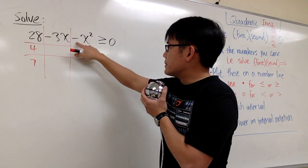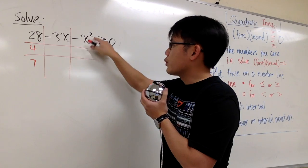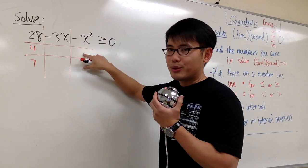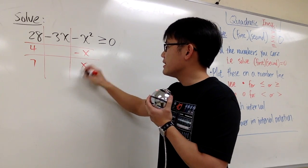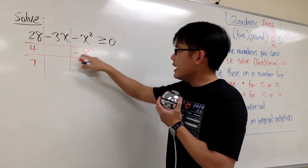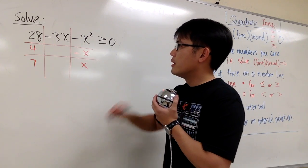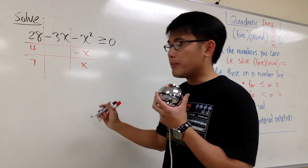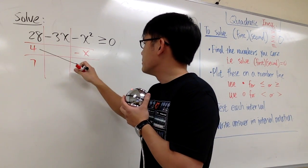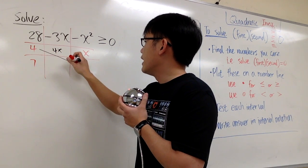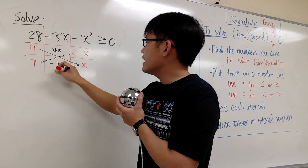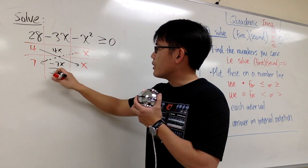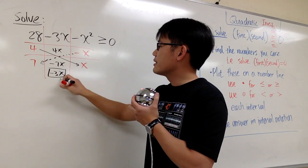Think about what times what will give you 28. And the answer for that is 4 and 7, the correct answer. Then, think about what times what will give us negative x squared. The choice for that is negative x and x. Negative x times positive x will give you negative x squared. And then, 4 times 7 will give us positive 28. This is the correct combination, because 4 times x is 4x, and negative x times 7 is negative 7x. Combine these two terms: 4x minus 7x will give you negative 3x. So you know this is correct.